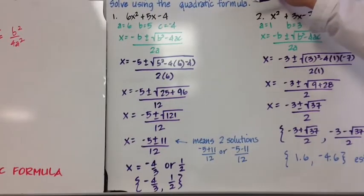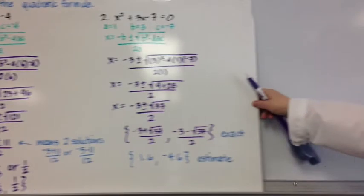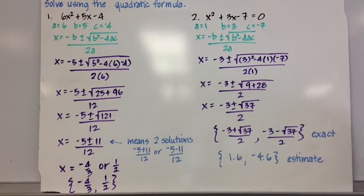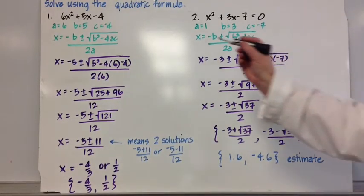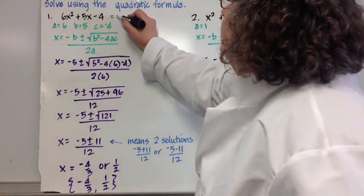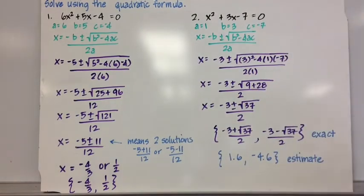The cool thing about the quadratic formula is you can use it to solve any quadratic equation. And I notice that I don't have a quadratic equation in problem number one. So in order to solve it using the quadratic formula, I better make it equal to zero. So I'm going to solve the quadratic equation 6x squared plus 5x minus 4 equals zero by using the quadratic formula that we just derived.